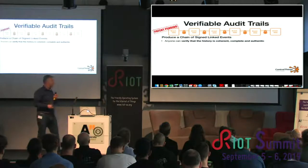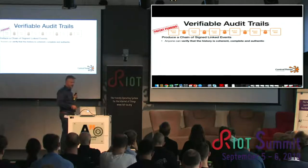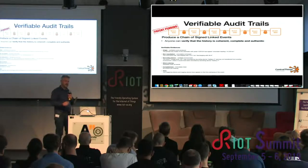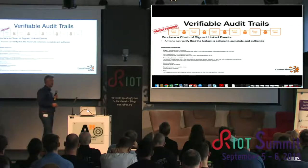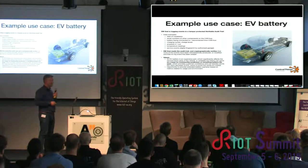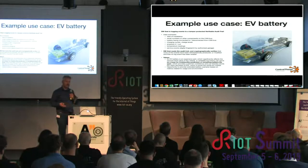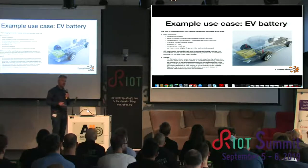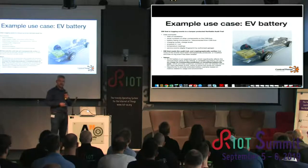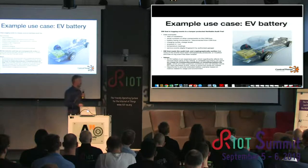This is about how to produce verifiable log files or verifiable audit trails in such a way that every event is chained together with the previous events. This allows you to verify that nothing has been modified, nothing has been added, and no records have been removed from the chain, and that the order hasn't been changed. As an example use case, consider an electric vehicle battery which can log its usage — what conditions and environments, how much you're discharging or charging — and the history of the battery that can affect the price of the whole vehicle. If you can do it in a verifiable way, you can probably get more value out of it.